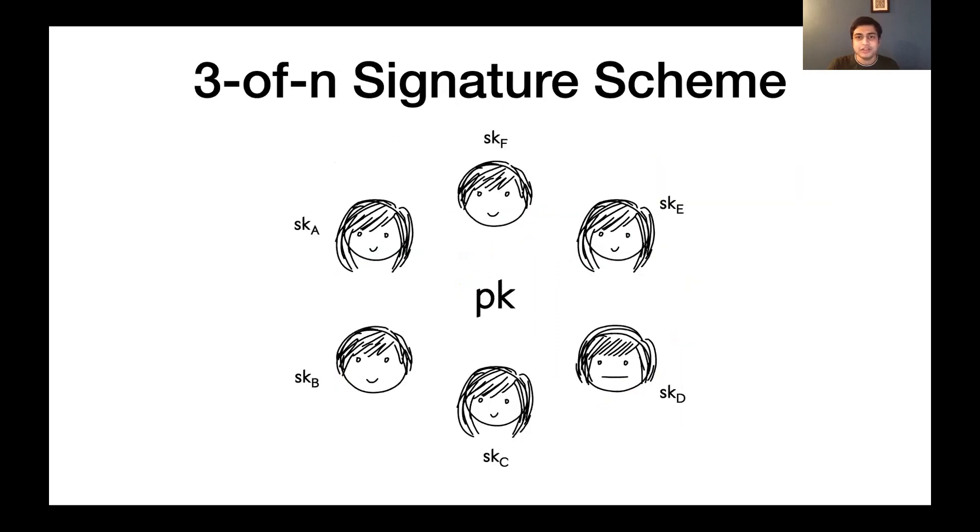For parameters, a 3-of-N signature scheme should allow any three parties in the system to produce a signature collaboratively, whereas any two parties should be unable to collude in order to coerce a third into signing a message he doesn't want to.